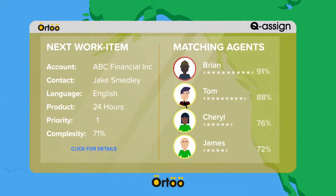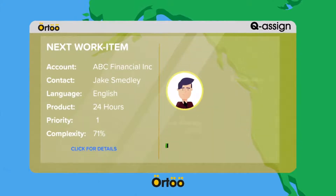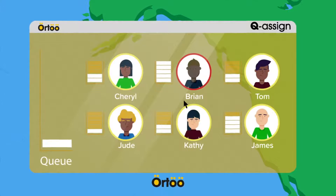Highly configurable scoring systems enable leads, cases and other work items to be categorized and prioritized and then assigned to the best available agent.